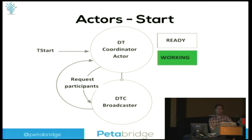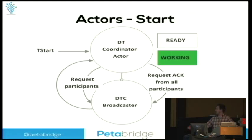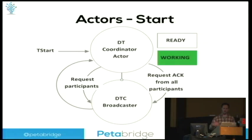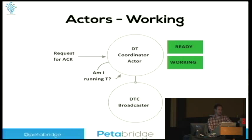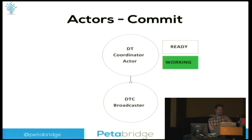Now the coordinator knows who the peers are, so he's going to send out the start message — basically saying, can I go or not? That message goes to his local broadcaster and then out across the cluster to all of his peers, who go through the same flow internally. Inside your actor, the request for the ack comes in. He's going to say, am I running that job? If the answer is no, he says go ahead, you're good to proceed. If he is running that job, he's going to say no, I am running that job already. Then the transaction as a whole will fail, and you can do a retry if that's what your logic needs.